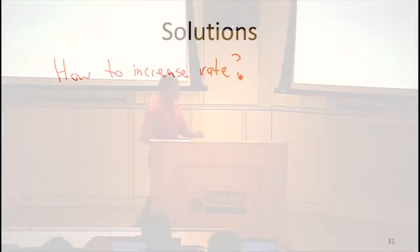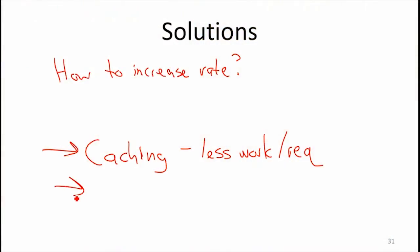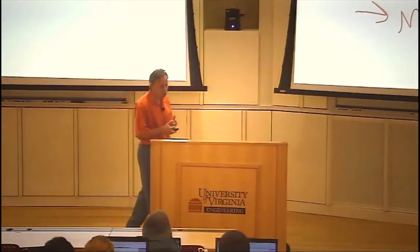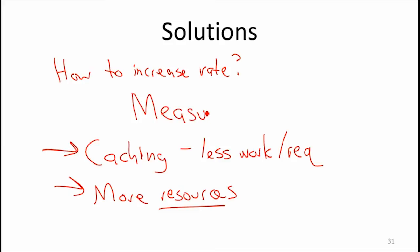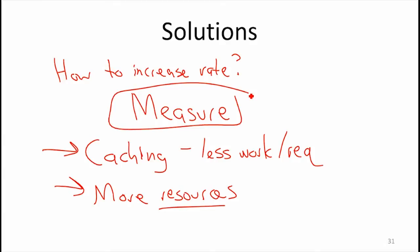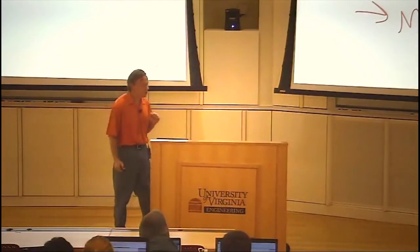Caching — if we can make it so we have to do less work for each request, that helps. Parallelize and get more resources. If we can get more resources, that could be parallelizing, getting more machines and dividing the traffic between them, or getting one machine that's more powerful. But what should we do before we start exploring any of these solutions? The first thing we have to do is understand where the time is going. If we don't have a way to measure things, we don't know what's going to work. Measurement is always where we should start — that's strategy number zero.